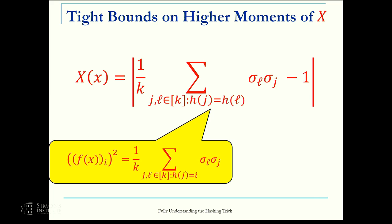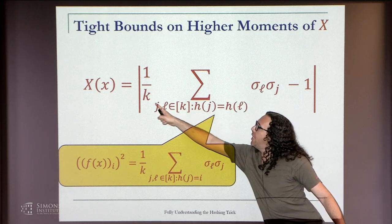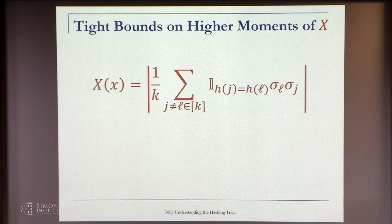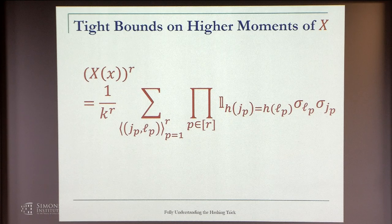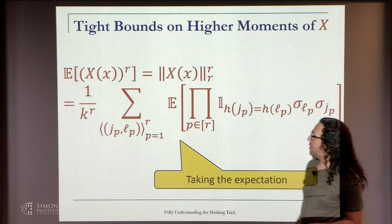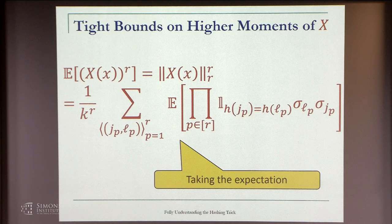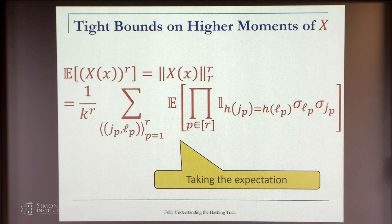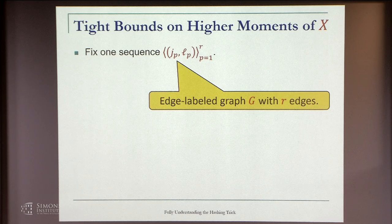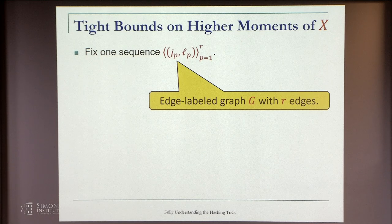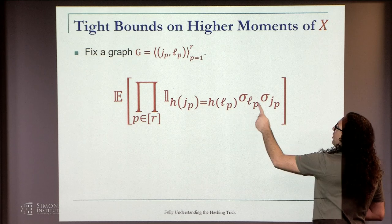We sum over all pairs j and l such that j and l are mapped to the same bucket. Note that if j equals l, this is always true, and this happens k times times 1 over k. We raise it to the r-th power. Then we take the expectation and use linearity. We sum over all r sequences of pairs of distinct pairs, where j_p is not equal to l_p for all p. We can think of this sequence as a labeled graph. Every pair is an edge and these are ordered. This can be a multigraph. The same edge can occur several times.